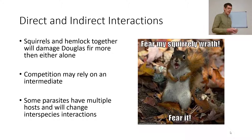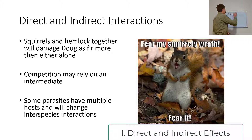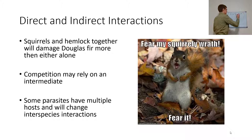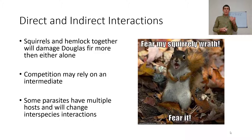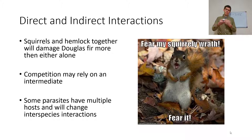So direct and indirect effects. Let's think about squirrels. Squirrels and hemlock together are going to reduce the fitness of a Douglas fir plant nearby more than either alone. Why? Squirrels tend to eat Douglas fir pine cones underneath the shade of a hemlock tree — you'll actually find these middens. The presence of a hemlock tree gives an area for the squirrels to eat, which increases their foraging efficiency in the area, thus decreasing the fitness of the prey.